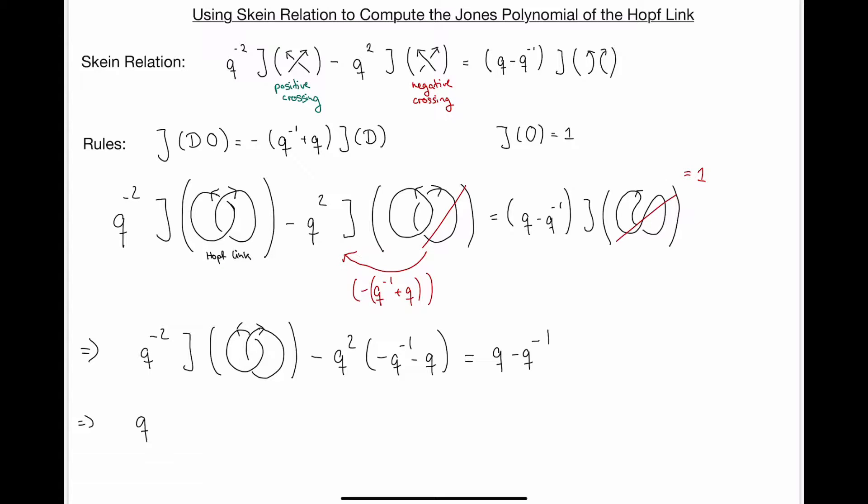So let's keep the q to the minus two times the Jones polynomial of the Hopf link on this side. And we want to move this term here to the right hand side. So what do we get?